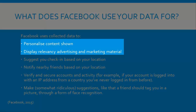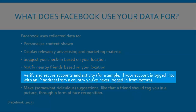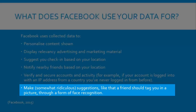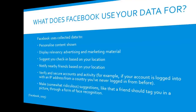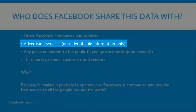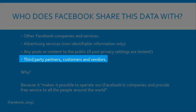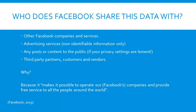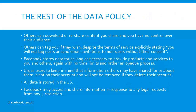Facebook can use this information to personalise content and advertising, suggest you check into places and tell your friends if you are nearby, verify accounts and activity, and even make suggestions such as that a friend tags you in a picture by comparing it to information from your profile pictures and other photos — almost like a form of face recognition. Facebook shares this information with other Facebook companies and services, as well as non-personally identifiable information to ad services, any statuses, posts or content to the public depending on your individual settings, and perhaps most importantly to third-party partners, customers and vendors — because in their own words, it makes it possible for Facebook to operate and provide free services to people around the world. The data policy also outlines what others can do, how information is deleted, and states all data are stored in the US and may be accessed for legal requests.